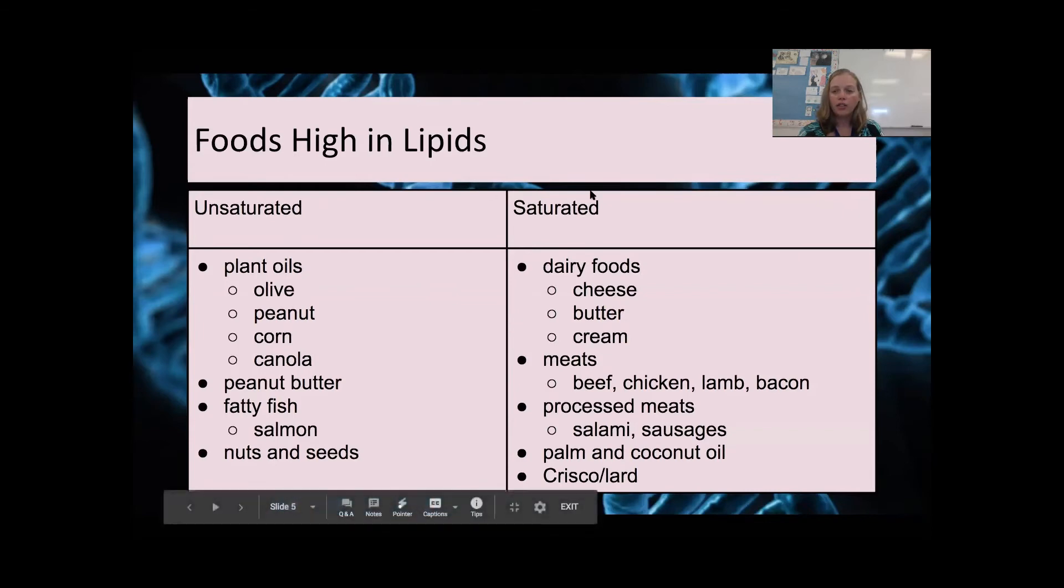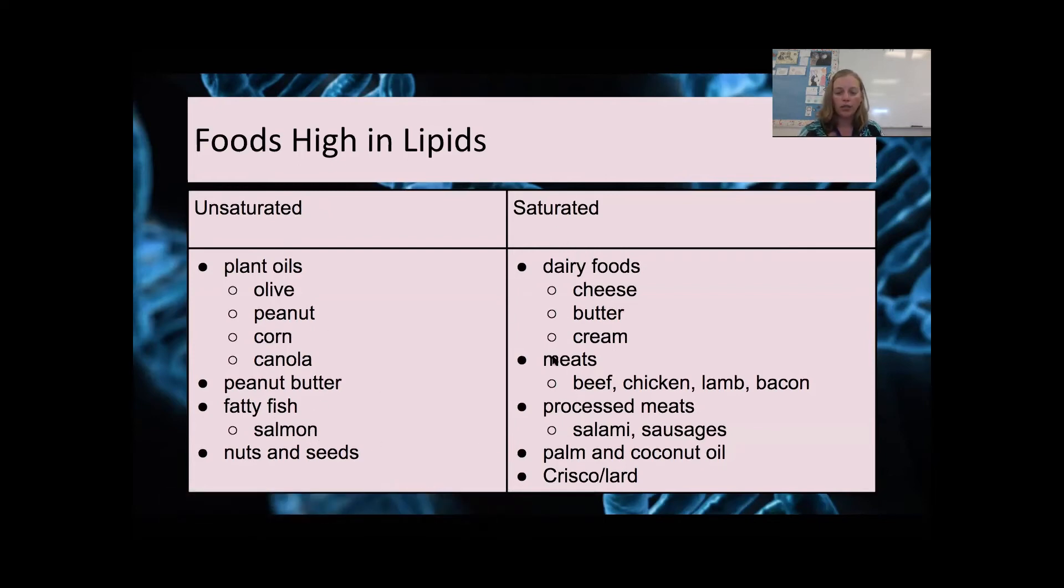Your saturated fats you can typically think of as your animal products, your cheese, butter, creams, your meats, any kinds of processed meat, but then we have a couple of examples of plants here palm and coconut oil that can also give you saturated fats. A couple of exceptions to the rule, but in general we have our plant fats and we have our animal fats over here.